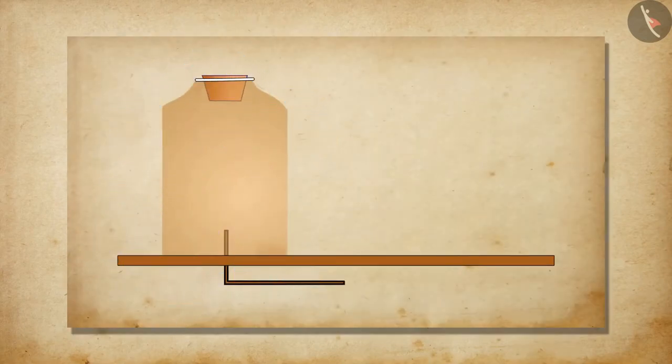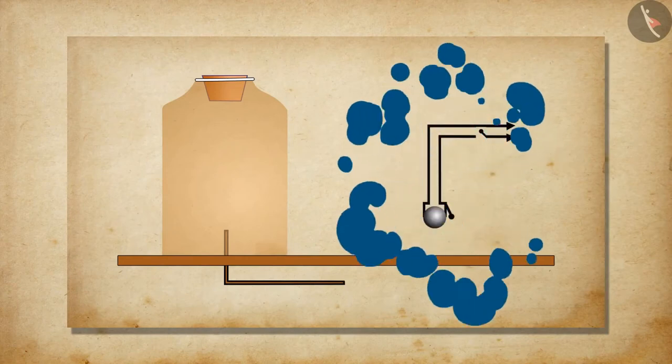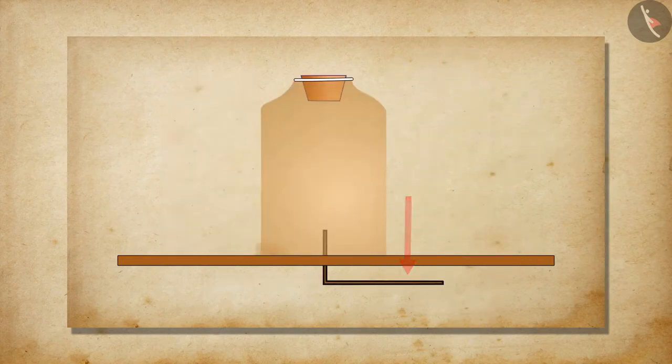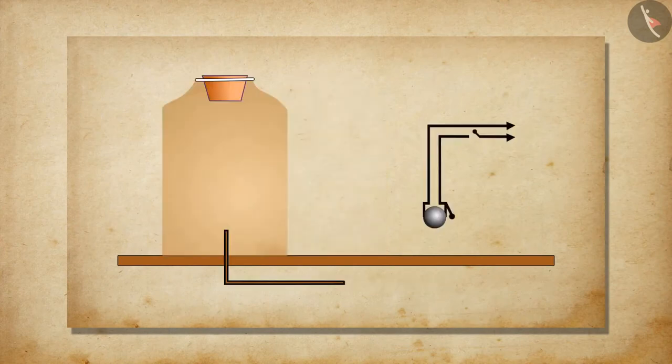Take an airtight glass bell jar and an electric bell. A vacuum pump is connected at the bottom of the bell jar. Suspend the electric bell inside the bell jar as shown in this image.